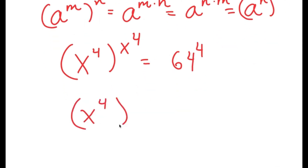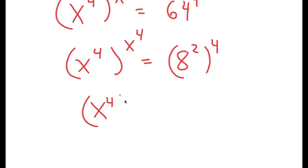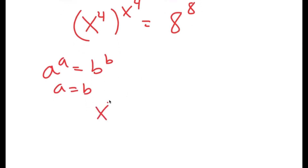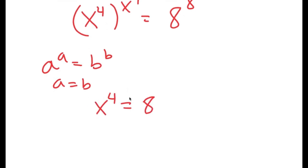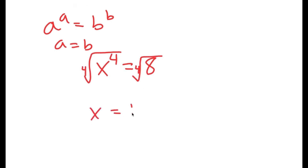Now 64 to the power of 4 I can rewrite as 8 squared to the power of 4, which turns into 8 to the power of 8. Now if I have something in the form a to the power of a equals b to the power of b, this means a equals b. So in this case x to the power of 4 is equal to 8. To solve for x I'm going to take the 4th root on both sides, so x is equal to positive or negative 4th root of 8.